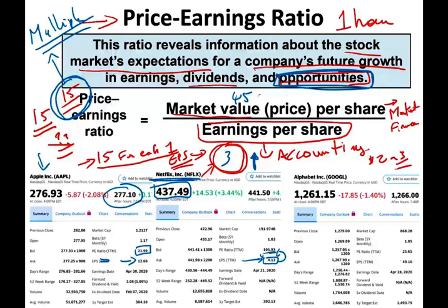Let's look at Google. Google's earnings per share is $49.16 per share — more than Apple, more than Netflix. Investors are willing to pay about 25 to 25.5 times the earnings per share — that's the multiple. If we take the earnings times the multiple, it gives us the price of Google. Simply put, when the company earns more and the future looks bright, your multiple is higher and your stock price is higher. It's all based on your earnings. The more you earn, the more you are worth — but we also have to account for your opportunity to grow. Amazon is the same thing; they have a lot of opportunities, so investors are paying a lot for Amazon.